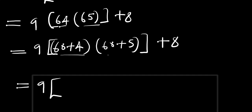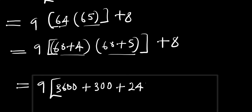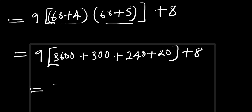So the next thing we are going to do is to multiply out what we have inside the bracket. 60 times 60 we have 3600, plus 60 times 5 we have 300, plus 4 times 60 we have 240, plus 4 times 5 we have 20. Then 300 plus 240 is 540, plus 20 is 560. So 3600 plus 560 gives us 4160.